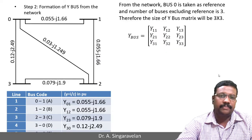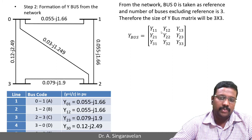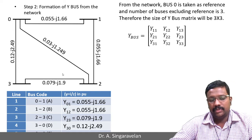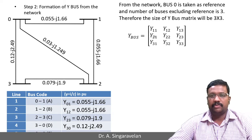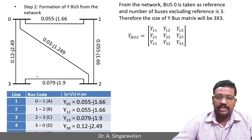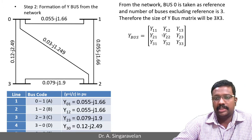The second step is to form the Y-Bus matrix. You can see Y11, Y12, Y13, Y21, Y22, Y23, Y31, Y32, Y33 — a 3×3 matrix — because even though there are 4 buses, we should not include the reference bus. Excluding bus 0, we have 3 buses, so the Y-Bus matrix will be a 3×3 matrix.